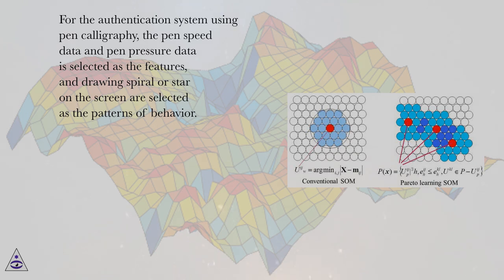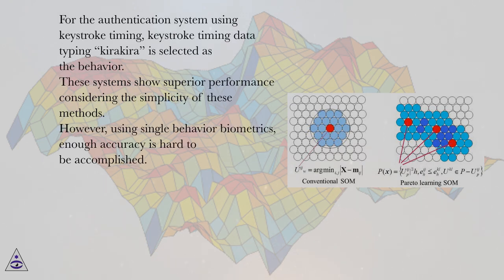For the authentication system using pen calligraphy, the pen speed data and pen pressure data is selected as the features, and drawing spiral or star on the screen are selected as the patterns of behavior. For the authentication system using keystroke timing, keystroke timing data typing kira kira is selected as the behavior.